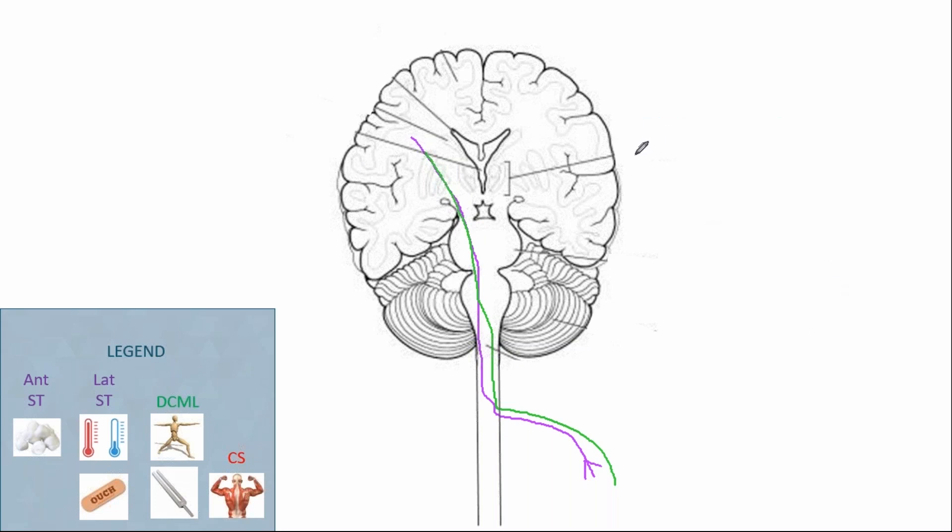The final tract I'm going to draw today is your motor tract, your corticospinal tract. So, this one will be represented in red. The corticospinal tract starts in the cortex. It travels down, descends into the brain stem, crosses over in the brain stem in that medulla, and then brings that motor information out for processing.